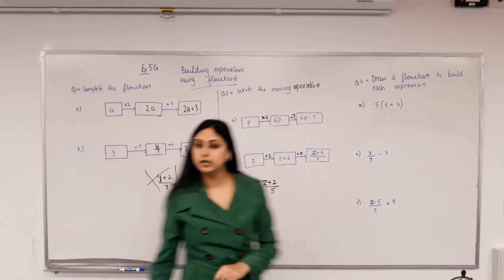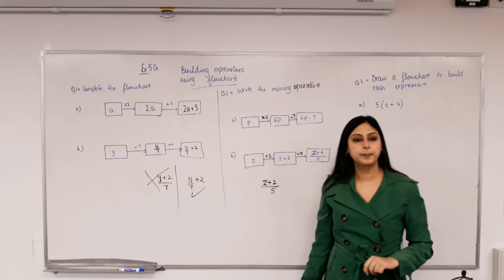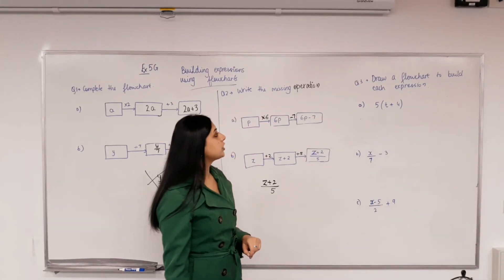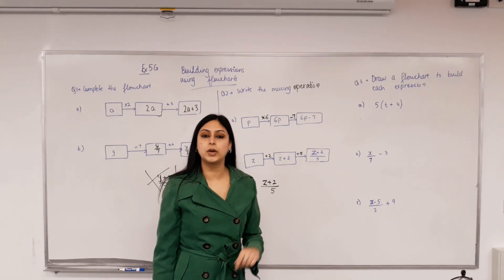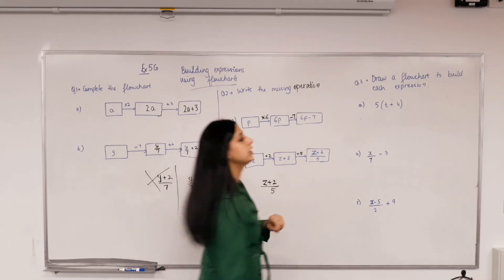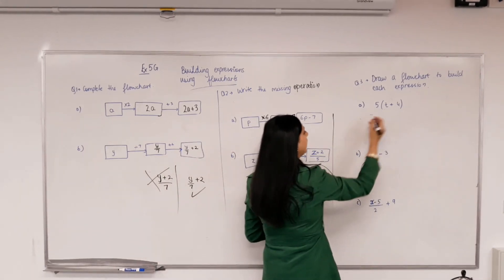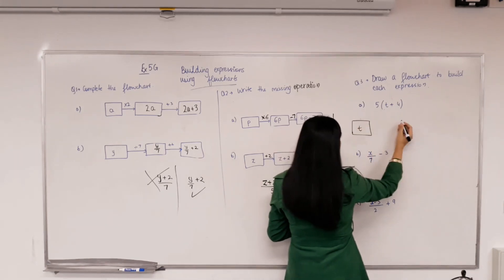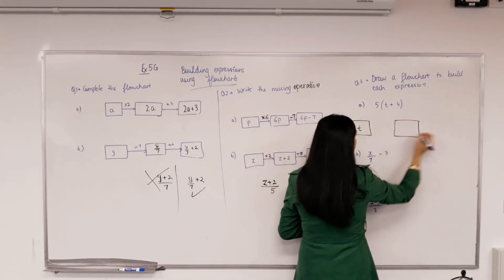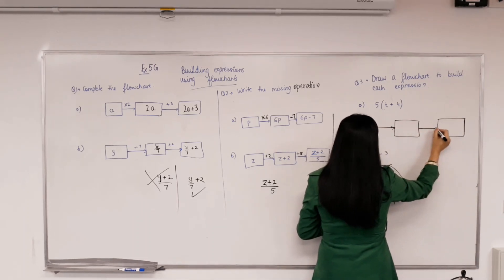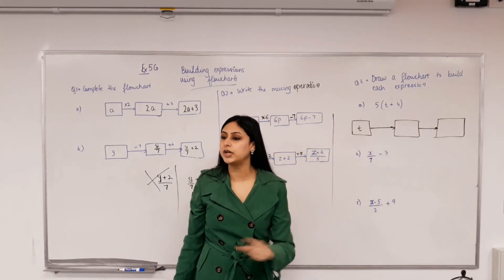Now the real stuff. Draw a flowchart to build each expression. Now I've given you the end result, you have to make your own flowchart to get to that point. So what's the pronumeral that we had? T. So we've done something to it to get an expression. Now we can see there's two things, plus 4 and times 5, but what was done first?